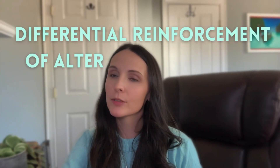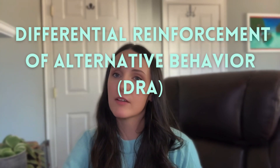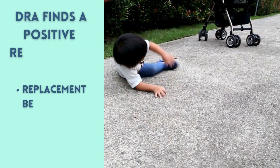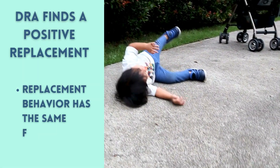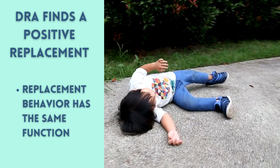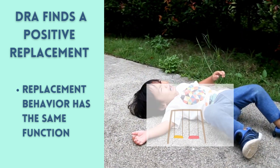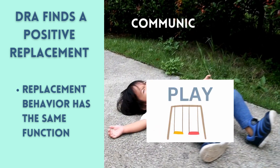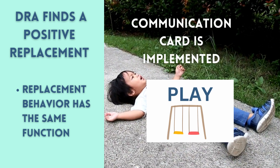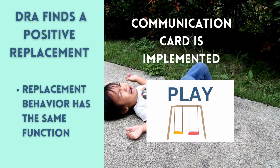Next, we have DRA, which stands for Differential Reinforcement of Alternative Behavior. DRA is all about finding a positive replacement behavior that serves the same function as the problem behavior. For example, consider a child who throws objects or has a temper tantrum when frustrated or overstimulated. The child is taught to use a break card instead.